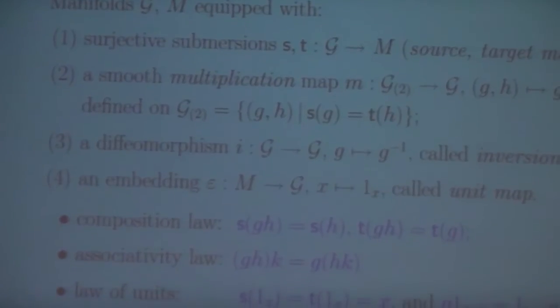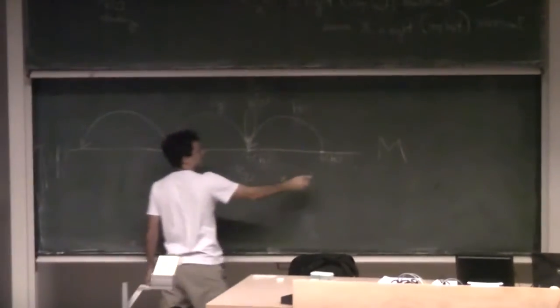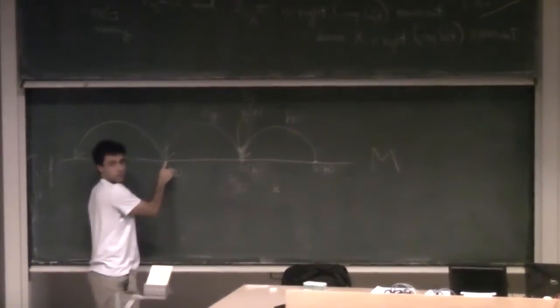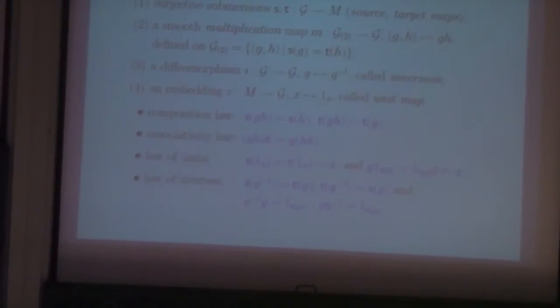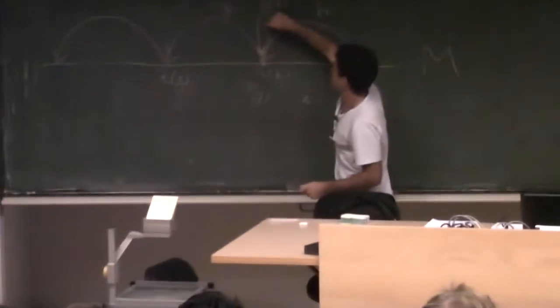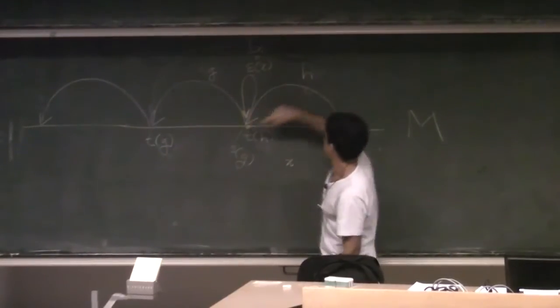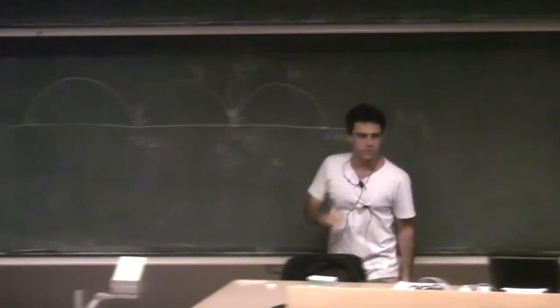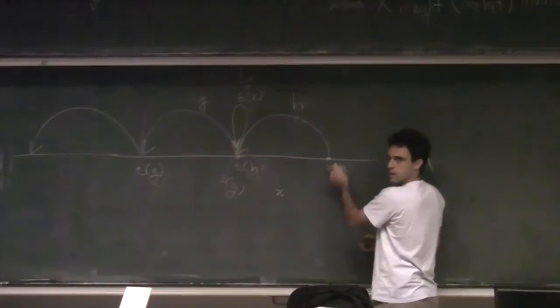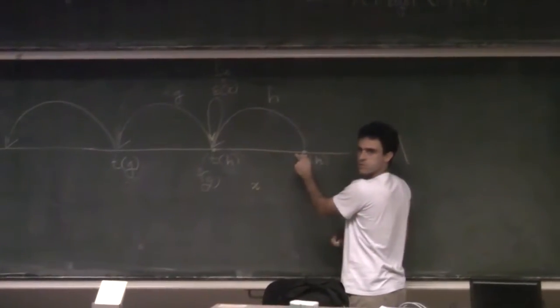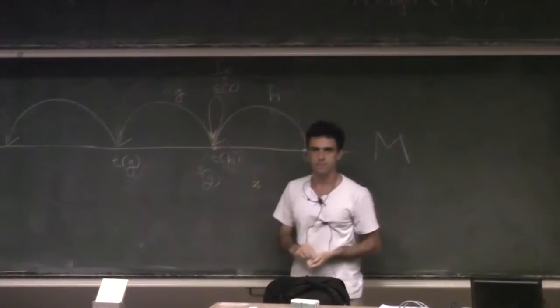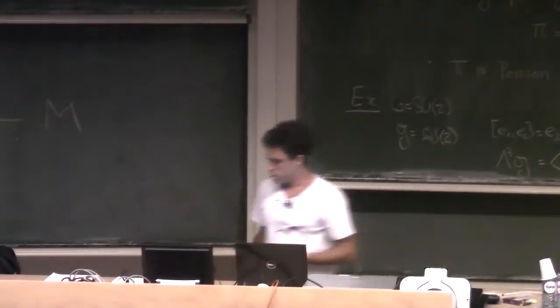You have the law of units: once you embed M inside G through these identity arrows, composing this identity arrow with something that starts at that point doesn't change it — it acts as a unit. The same holds on the left. And there is the law of inverses: if you have an arrow, the inverse goes the other way, and if you compose them you get one of these unit arrows — but each point has its own identity. So that's what a Lie groupoid is.